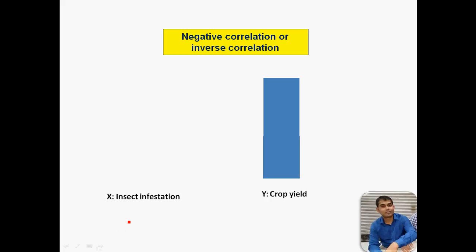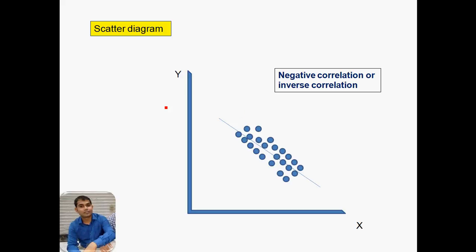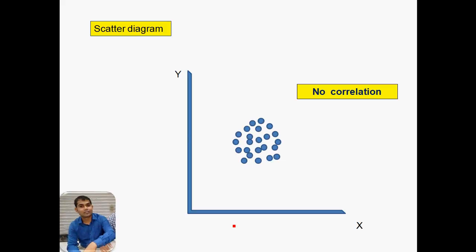For negative or inverse correlation, we take the example of insect infestation and crop yield. Whenever pest infestation increases, the crop yield will decrease. In the scatter diagram of negative correlation, the Y variable is decreasing whenever the X variable is increasing. If the scatter diagram shows points confined to one place, it indicates the two variables have no correlation between themselves, and that is called no correlation.